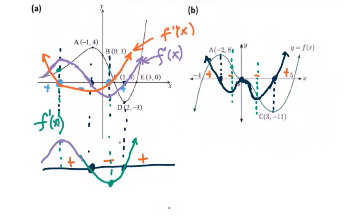Let's see how you draw the second derivative function. If you find the inflection point, then draw the sign diagram: going up is positive, here is negative, this will be positive, negative. So you just need to connect this — going up, going up. That's it. This one is the second derivative function.